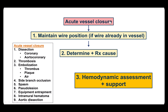So what do we do if we have acute vessel closure? The first step is to maintain wire position, but unfortunately here the wire had been removed, so that is not an option. The next step is to understand the cause. The causes are dissection, thrombosis, embolization, occlusion from a stent or side branch, spasm, pseudo-lesion, equipment entrapment, intramural hematoma, and aortic dissection. In this case, the odds are overwhelmingly that this is due to dissection. When there is such an acute vessel closure, there may be a need for hemodynamic support, especially for a large vessel like the LAD.